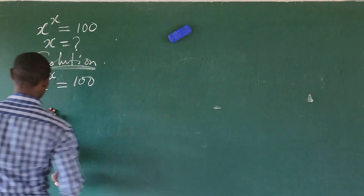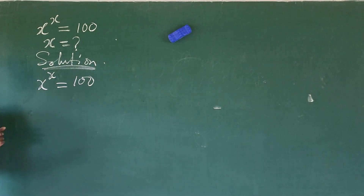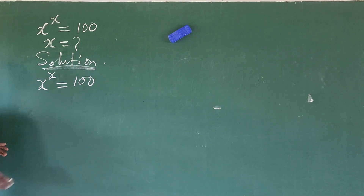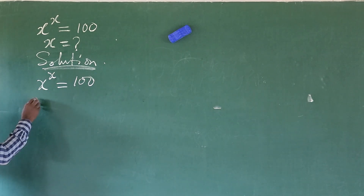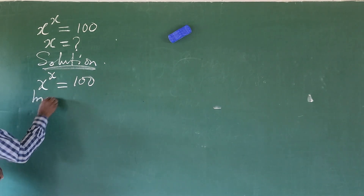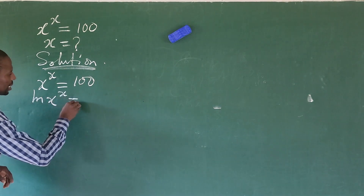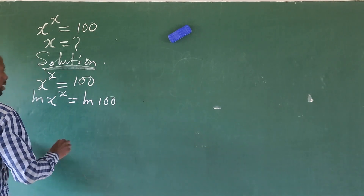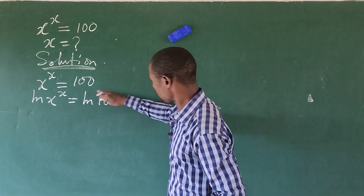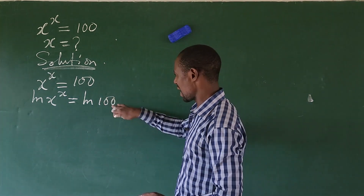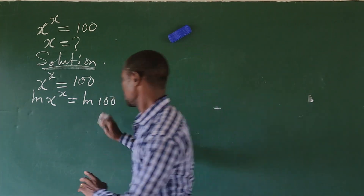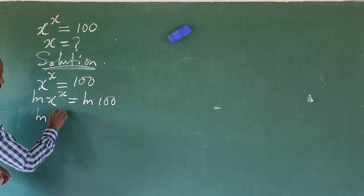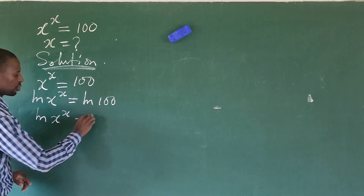So what we do is apply a different approach to this question. From here, let's take the LN of both sides. I prefer using the natural log. Taking the LN on both sides, we're going to have LN of x to the power of x equal to LN of 100. Now I can rewrite 100 as 10 to the power of 2, so the right hand side becomes LN of 10 to the power of 2.